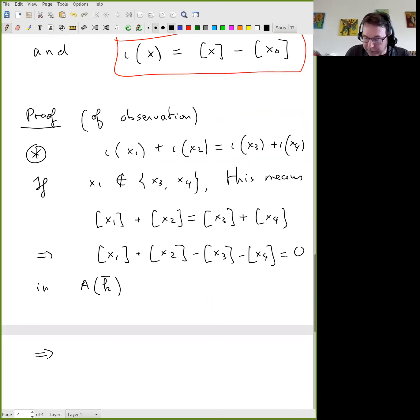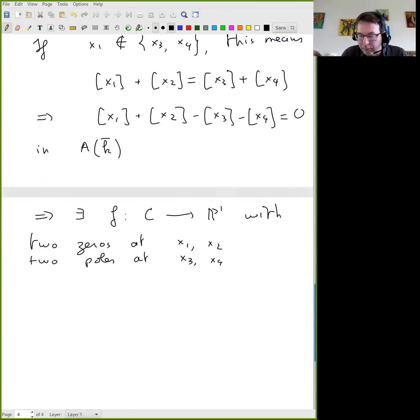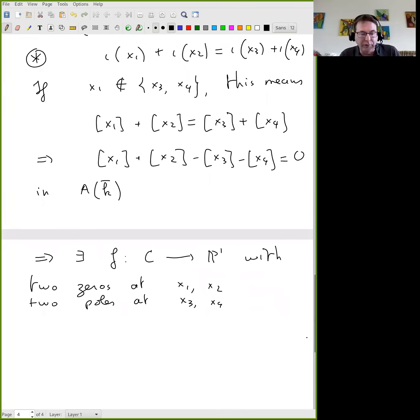When you think of this as divisors. So that means that the divisor X1 plus X2, so the formal basis vector X1 plus basis vector X2 equals this. Which means that, as I said, there is no cancellation when you do X1 minus X3 or X1 minus X4. So this is really a combination of four points. It is zero in A of K bar or A of K, doesn't matter for being equal to zero. And what this means is that by definition of D_zero, so this thing is in D_zero. So there exists a function non-constant from the curve to P1 with two zeros at X1 and X2 and two poles at X3 and X4.